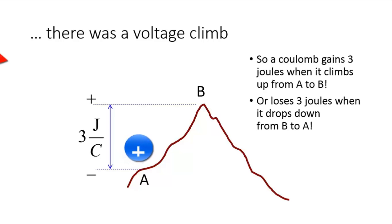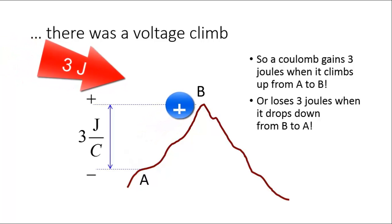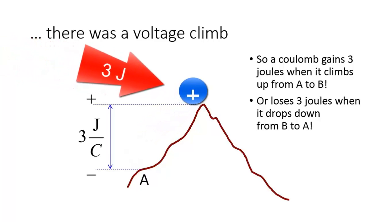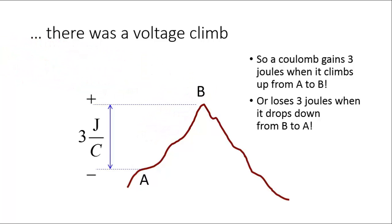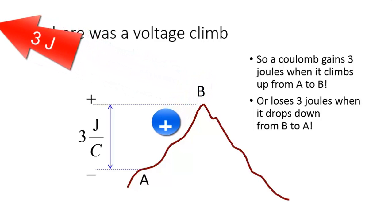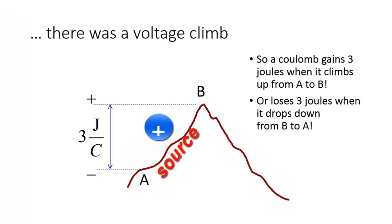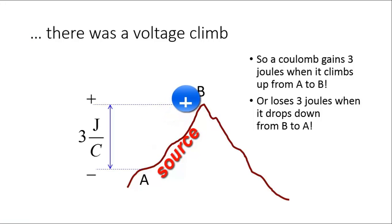So, every coulomb that climbs up from A to B gains 3 joules of energy. And every coulomb that rolls downhill from B to A loses 3 joules. To climb from A to B, there has to be a source of energy in the charge's path, pushing those charges uphill.